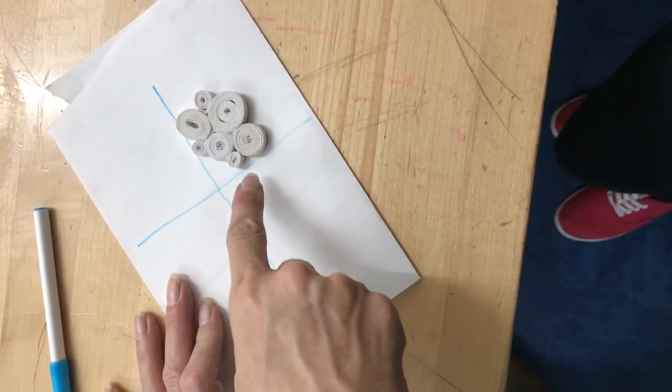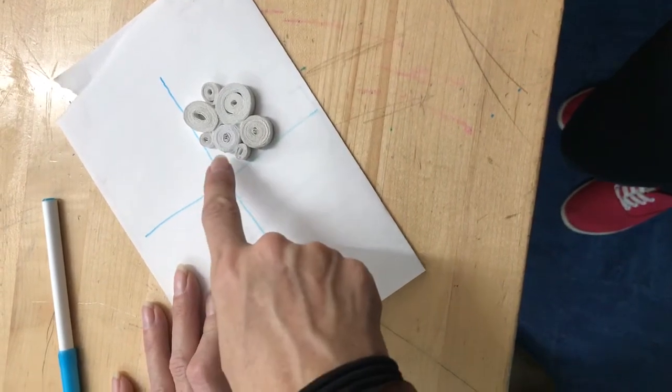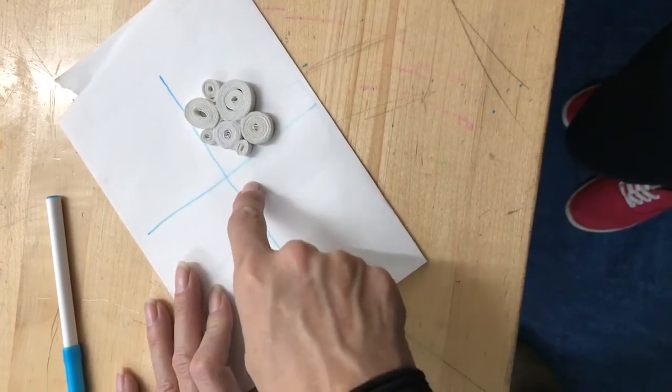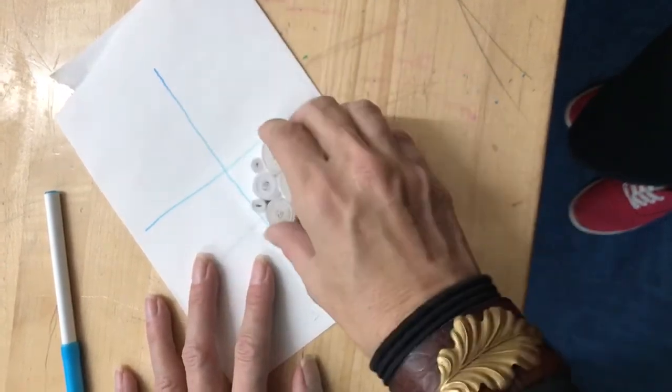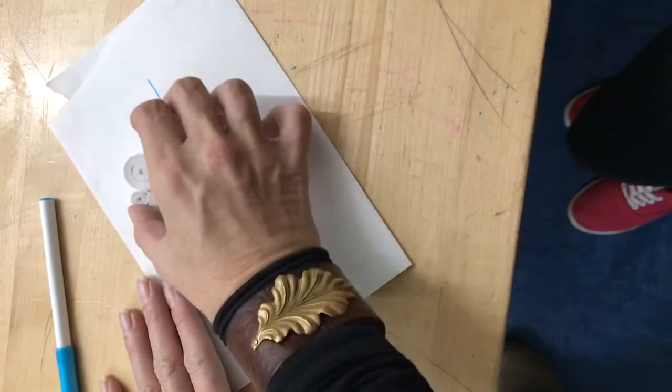I would start off by doing your one, two, three, four on that, and then have this one complete. And then do exactly here, over here, over here, and over here.